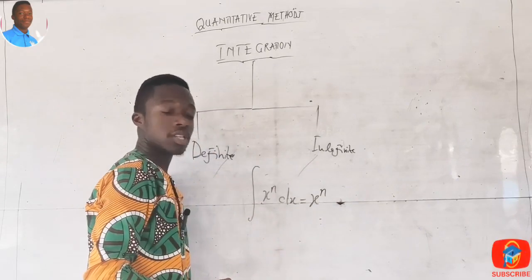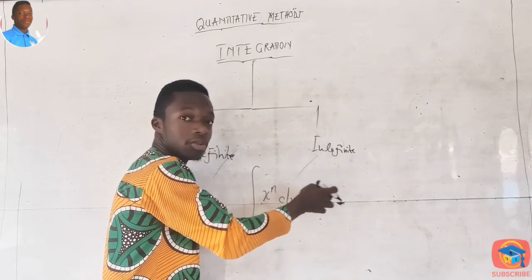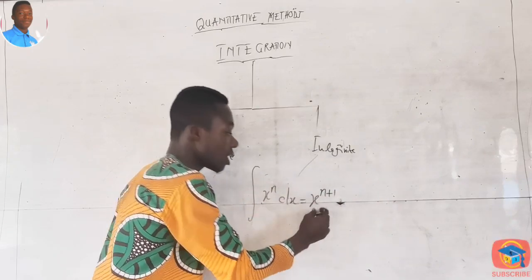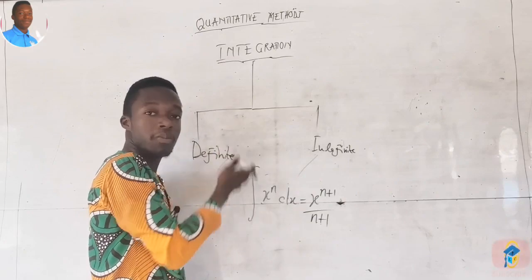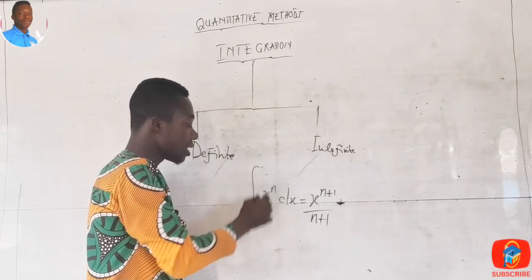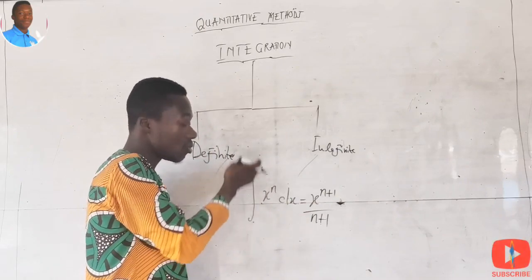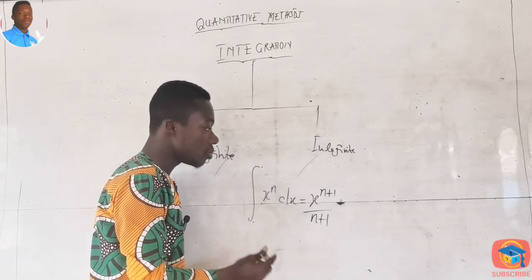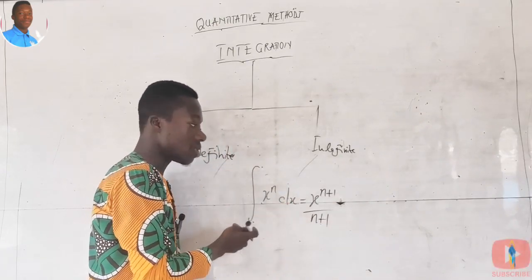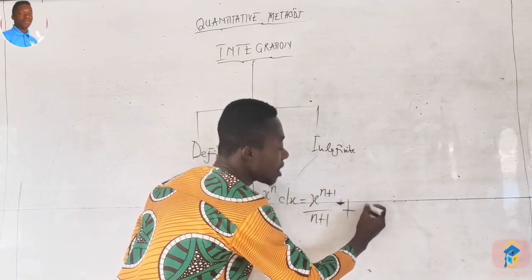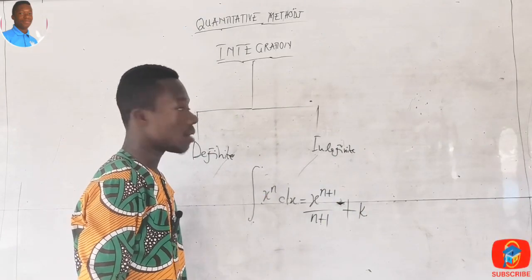To integrate x^n dx, all we do is add one to the exponent n, giving x^(n+1), and then divide by the new exponent (n+1). Because this is an indefinite integral — meaning there is no limit — we also add a constant, which we call k or c. So the general rule: add one to the exponent and divide by the resulting exponent, then add the constant.